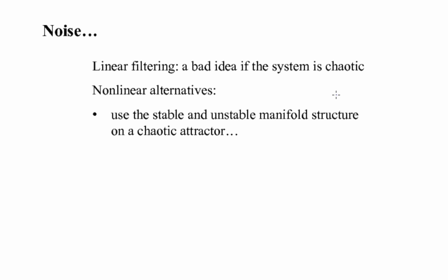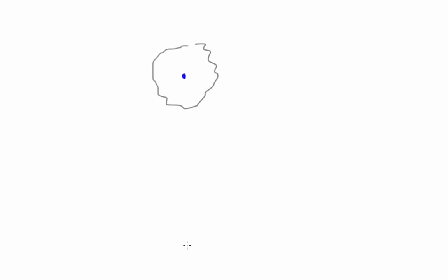A noisy measurement is like a point in state space with a noise ball around it. If there were no noise, you'd measure the point right in the middle where the blue point is. But because of the noise, you might see that point any place in this ball. Now think about what the stable and unstable manifolds will do to a ball like this. As time evolves, that ball will stretch along the unstable manifold and compress along the stable manifold. That can be turned to advantage.